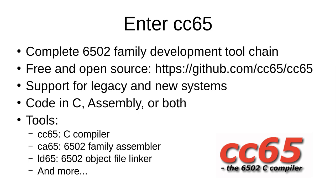You can code in C and assembly, or both, within a single application. The different tools within CC65 are: CC65 itself, which is the C compiler; CA65, which is the 6502 assembler that comes with it; and LD65, which is the linker. The object files you build from source code can be linked together to create your final application.